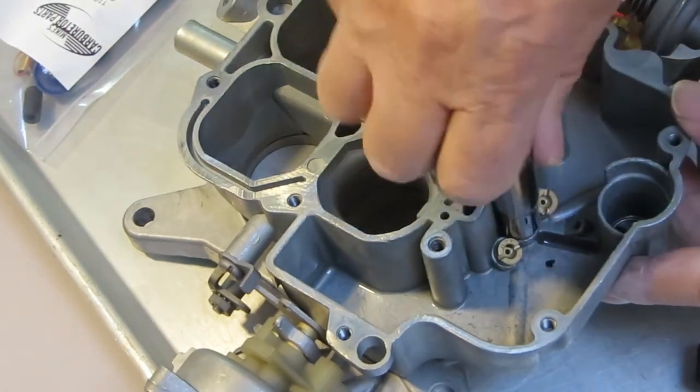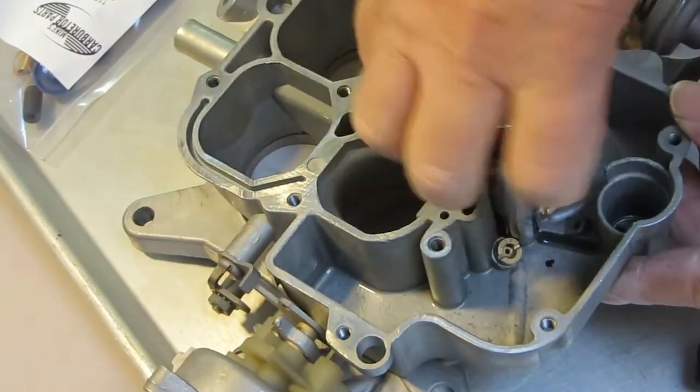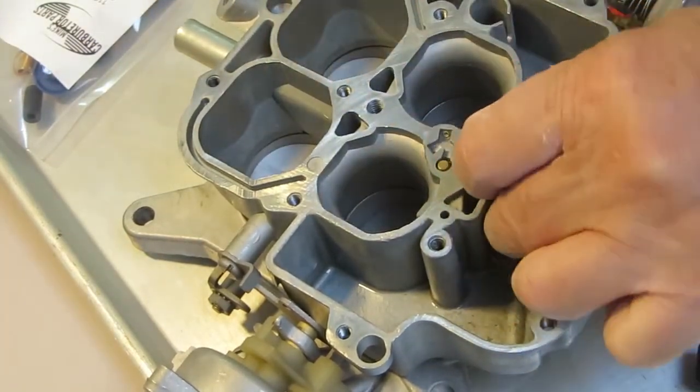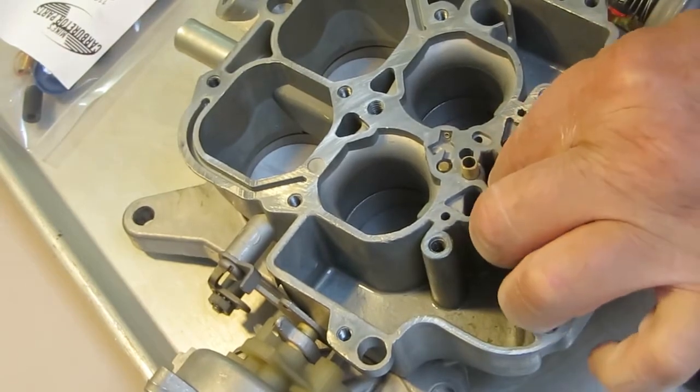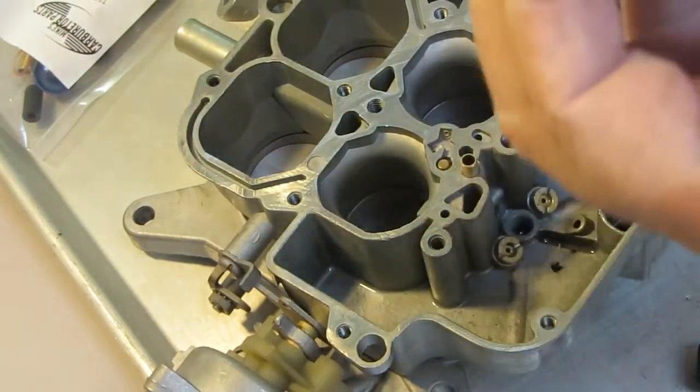And here I'm taking out the power jet. I believe I used a 3/8ths deep socket to do that. It's a simple spring-loaded jet.